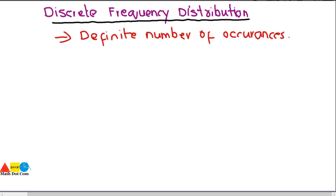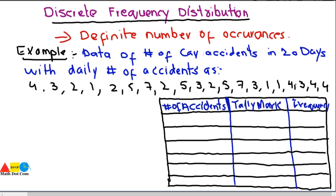Let's look at an example to understand the concept better. Here we have to make a frequency distribution table. Keep in mind that we are dealing with discrete frequency distribution because the data is countable — you can call it limited data, small data, countable data, or definite data. When you encounter such data, you use a discrete frequency distribution table.